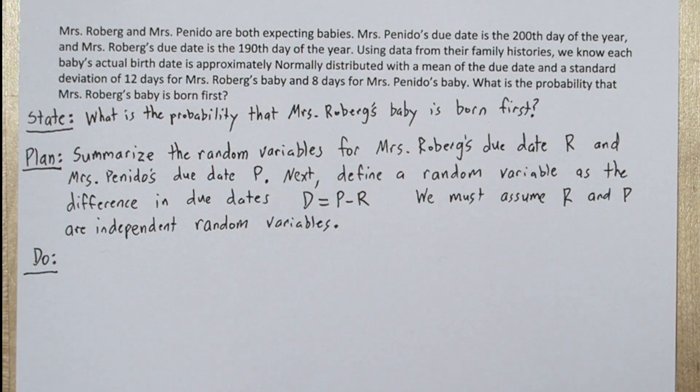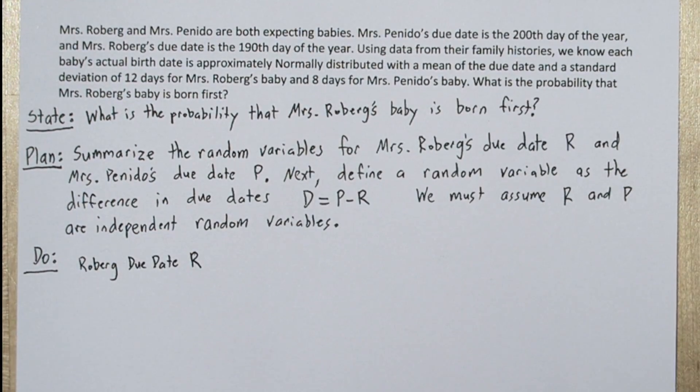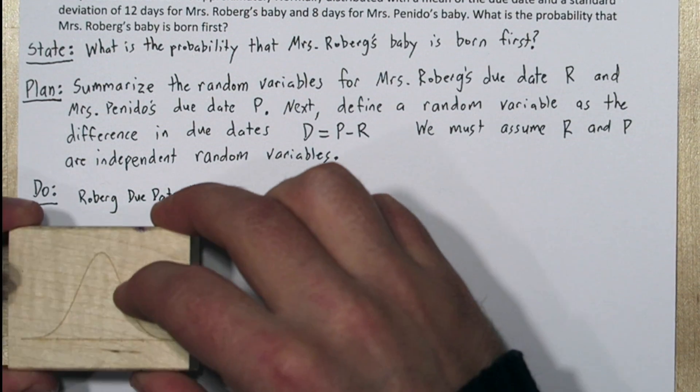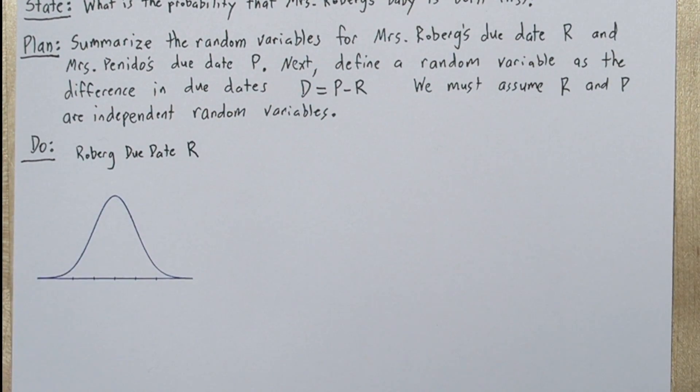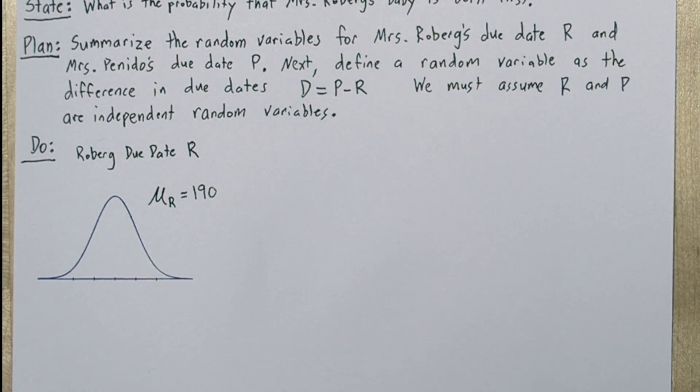Alright, so we'll get started with the do step. Let's start by describing our random variable R. Since the distribution of the due dates is normally distributed, let's stamp a normal distribution.